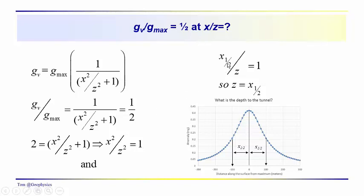So, X_1/2, we're referring to a specific location now. This is the position to the left or to the right where the anomaly falls off to one-half of its maximum value. So, this is a specific value of X. We should label it with a subscript X_1/2, indicating that it's either of these two positions here. So, Z then is just equal to X_1/2. That's easy.